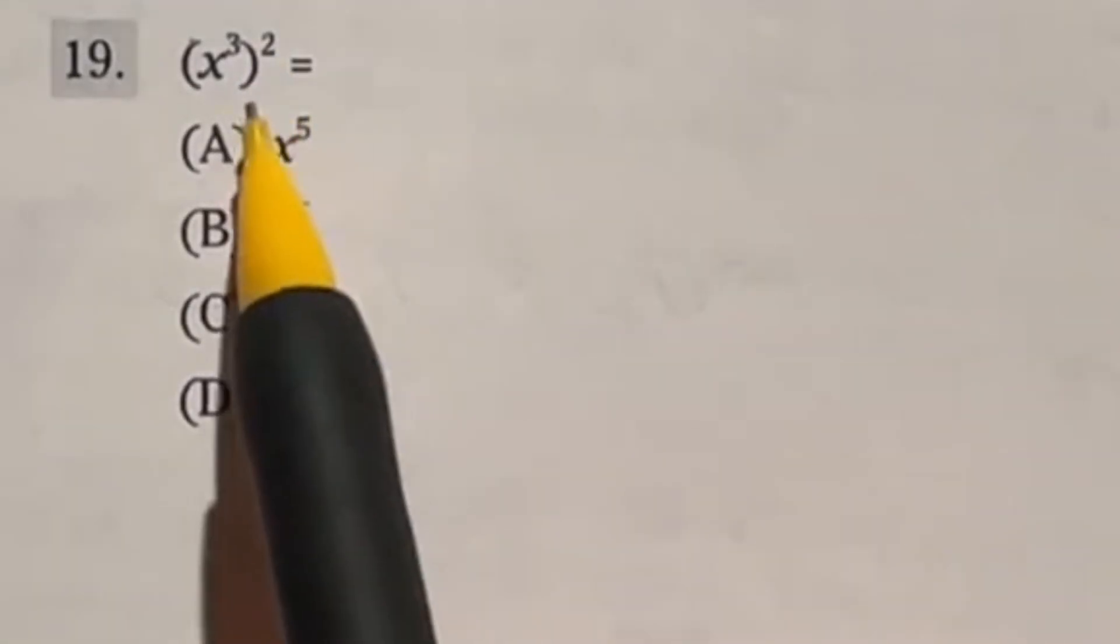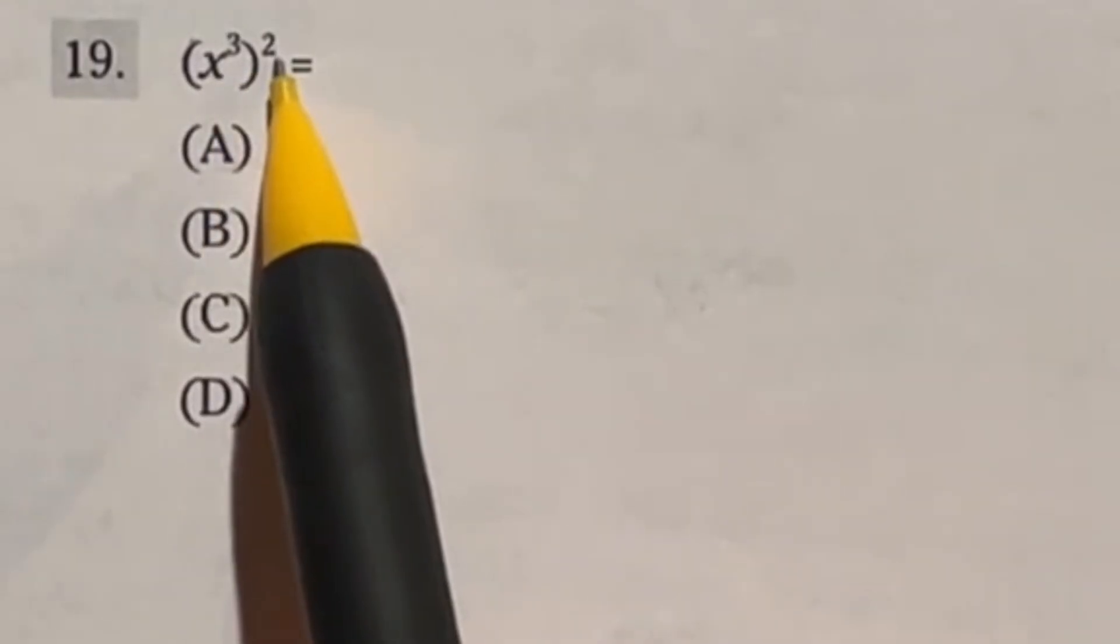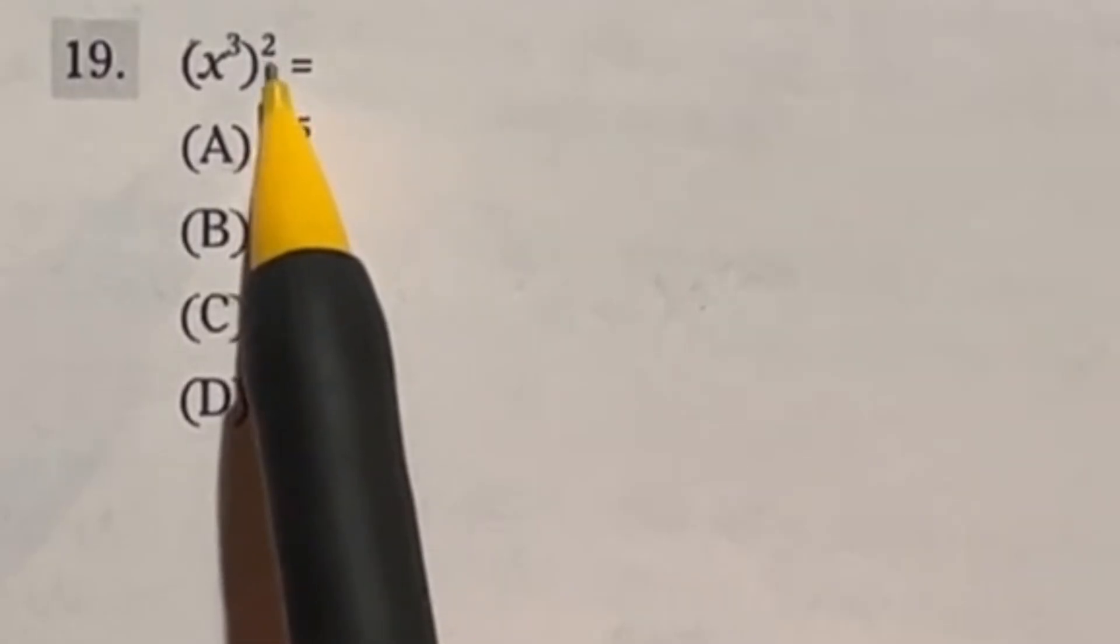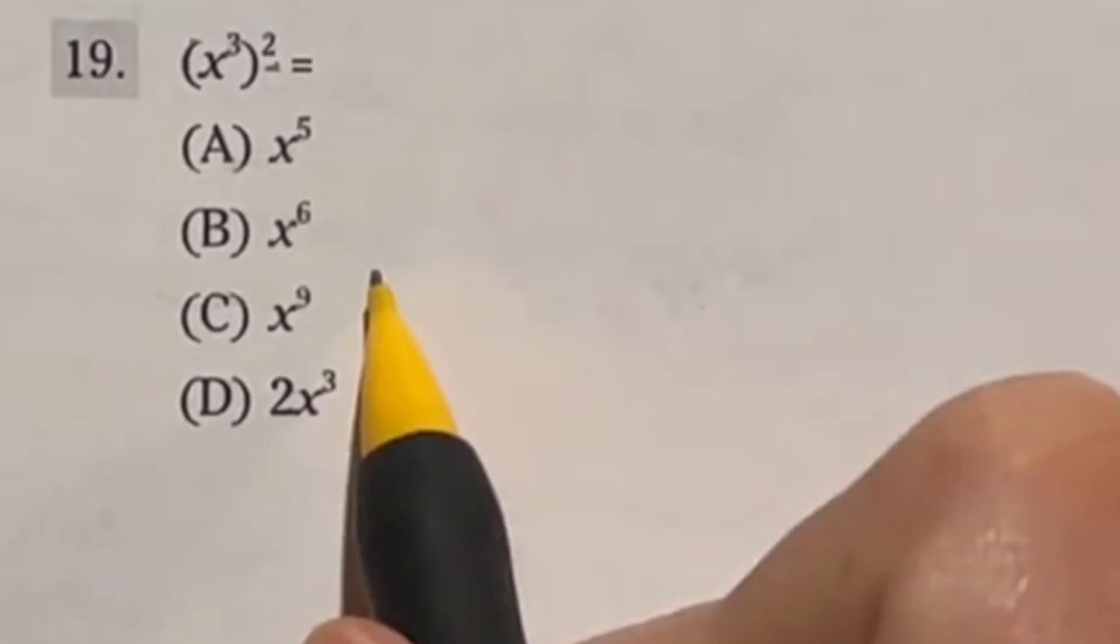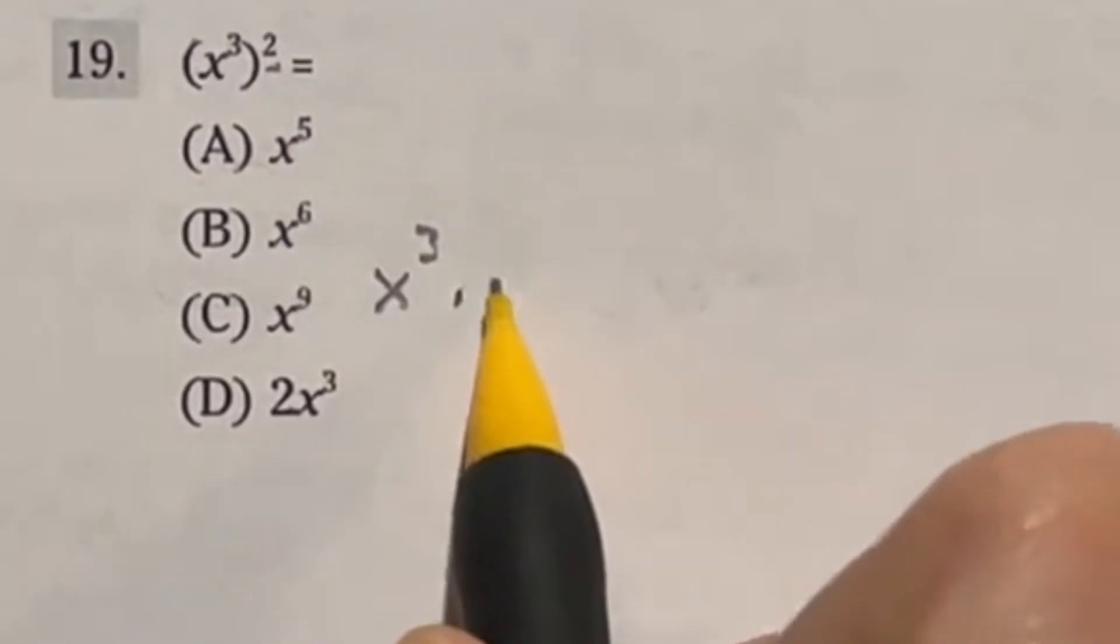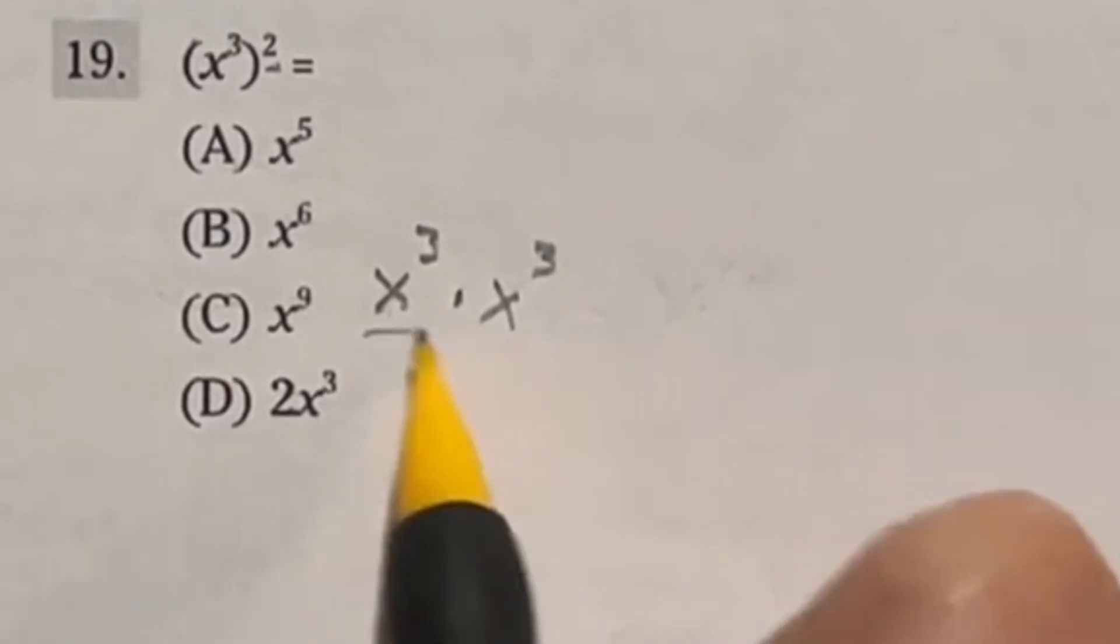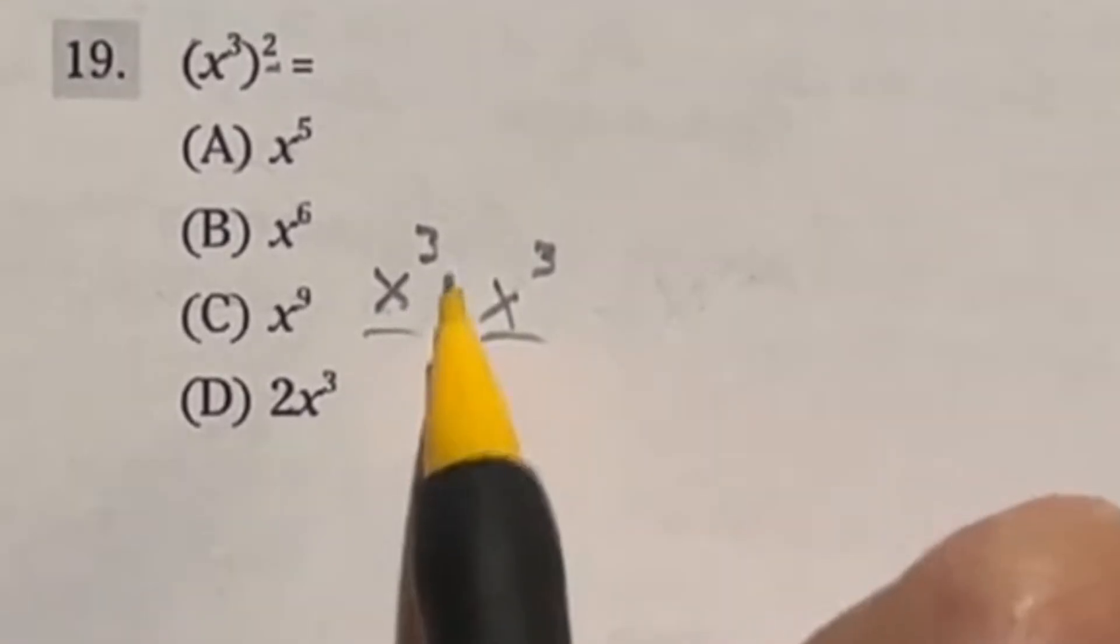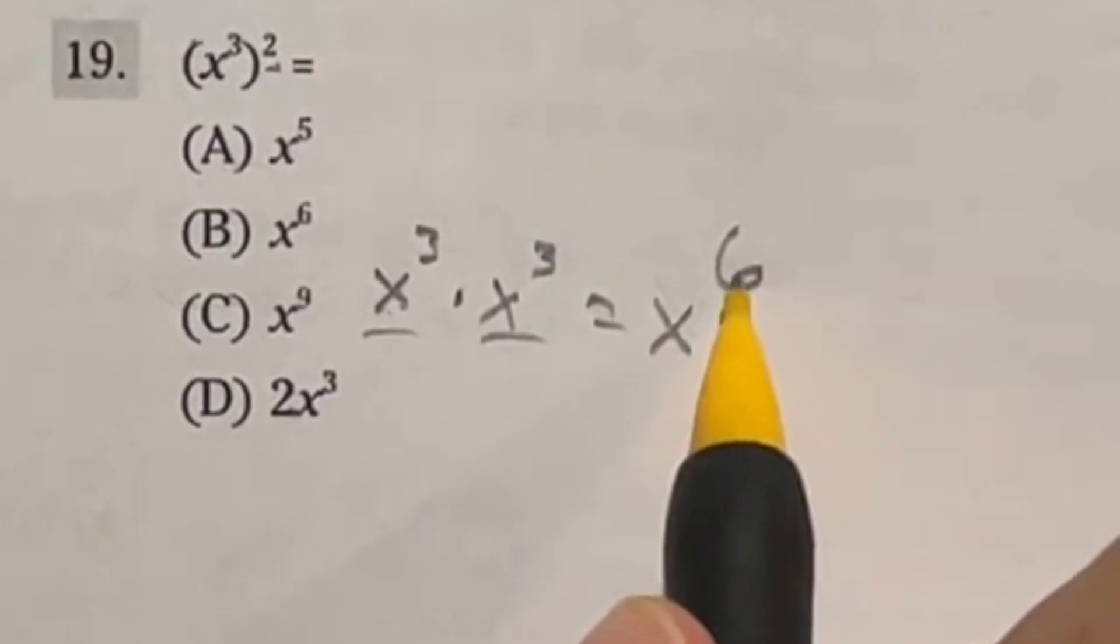Number 19 is an exponent question here. We have x to the third power raised to the second power. So what does it mean to raise something to the second power? It means you take this whole thing and multiply it by itself. So in this case, it's going to be x to the third power times x to the third power. And when you do that, there's something called the product rule that states that if you have the same base being multiplied together with exponents, you can actually just add those exponents together. So in this case, it would be three plus three, which is six. So we would have x to the sixth power.